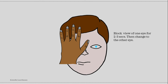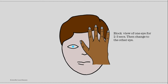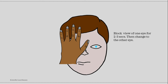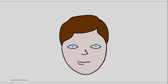Hold your hand over the patient's eye for about 2-3 seconds, then change to the other eye and hold the hand over this eye as well for about 2-3 seconds. Then change back to the first eye and repeat this a few times. This is how you perform the test — but what are you actually looking for?